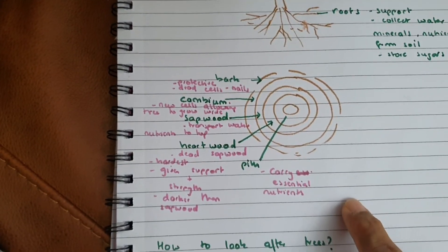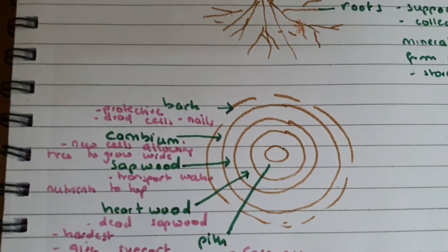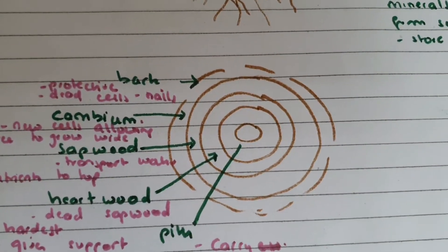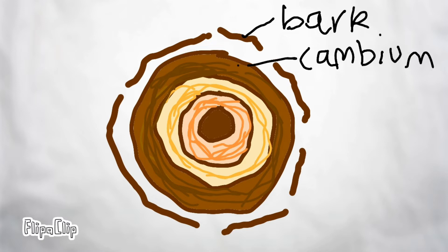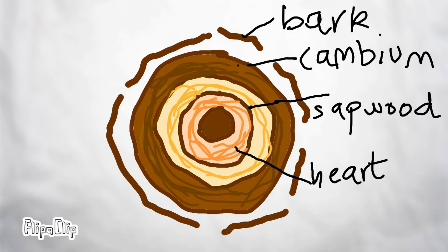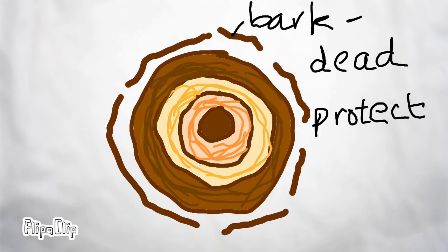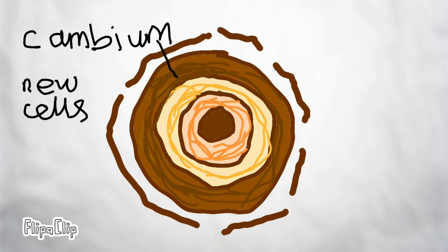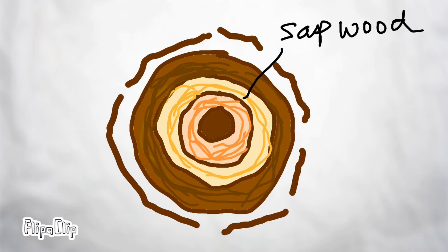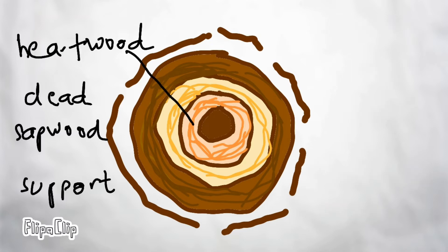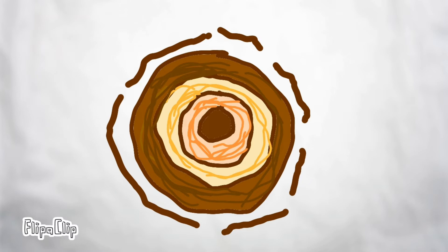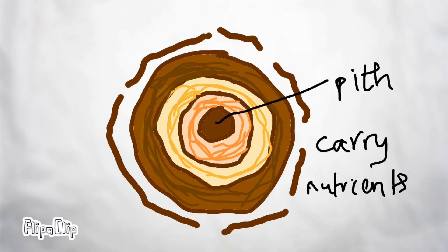Now let's take a look at the parts of the trunk. The trunk has many layers. The bark is the outermost layer. Below that is the cambium, then the sapwood, then the heartwood, and at the center is the pith. The bark is a hard, dead layer. The cambium allows new cells to grow. The sapwood transports water and produces sap. The heartwood is dead sapwood that provides strength and support. The pith carries nutrients.